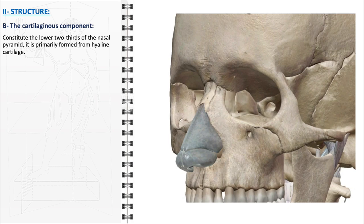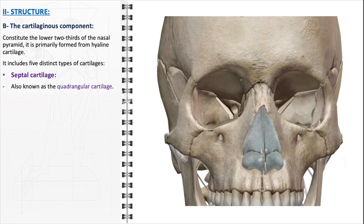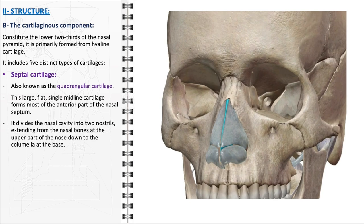The cartilaginous component of the nasal pyramid, constituting the lower two-thirds of the structure, is primarily formed from hyaline cartilage, and includes five distinct types of cartilages. The septal cartilage, also known as the quadrangular cartilage, is a large, flat, single midline cartilage that forms most of the anterior part of the nasal septum, dividing the nasal cavity into two nostrils. The septal cartilage extends from the nasal bones at the upper part of the nose down to the columella at the base, providing stability and continuity.